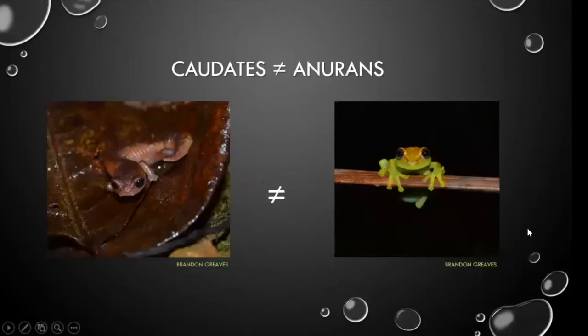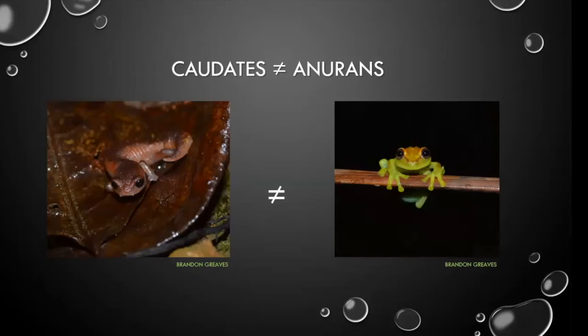It's important to remember that salamanders are not frogs — caudates are not anurans. That's not something I'm saying to belittle you. It's a saying one of my teachers in veterinary school used: cats are not dogs. She used that to remind us that even animals that seem physiologically similar have a lot of differences you need to take into account when giving treatments.